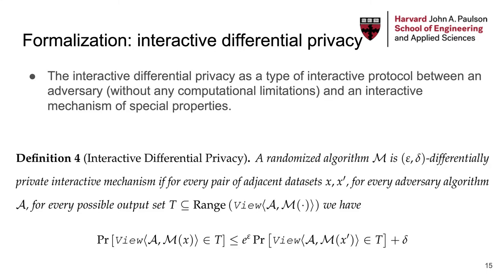Now we are ready to formally define interactive differential privacy as a type of interactive protocol between an adversary and an interactive mechanism. Specifically, an interactive mechanism is epsilon-delta differentially private if for every adjacent dataset x and x', for any adversary algorithm A, for any possible event T of the view of the adversary, the probability that we see T when the dataset is x is at most e to the epsilon times the probability that we see T when the dataset is x', plus delta.